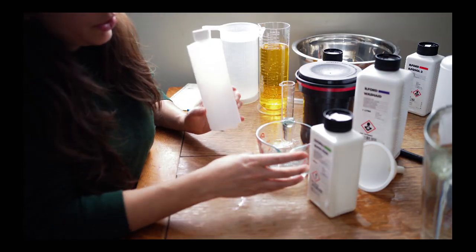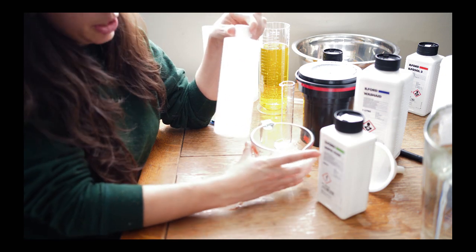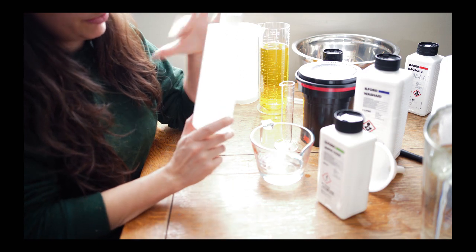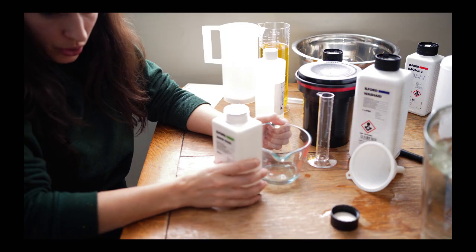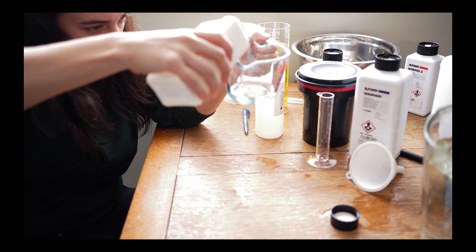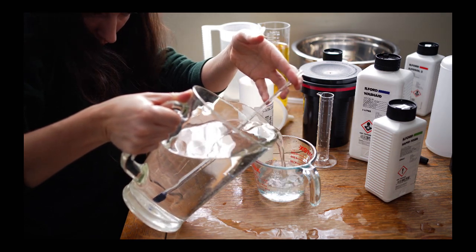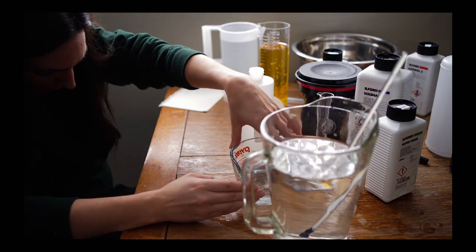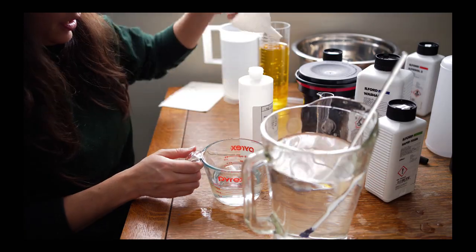So I'm going to do my fixer in this container after I measure it in the measuring cup. So I'm going to do 100 milliliters of fixer and then fill it up to 400 of water. I'm putting 100 milliliters of fixer in here. That's 200 give or take.